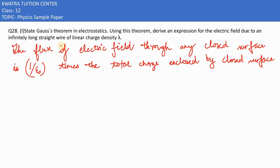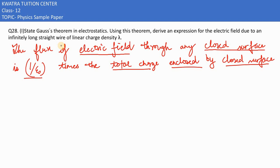In this question, part 20, it says: State Gauss's theorem in electrostatics. Gauss's theorem states that the flux of the electric field through a closed surface is equal to 1/ε₀ times the total charge enclosed by that closed surface. So φ = Q/ε₀.